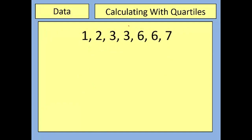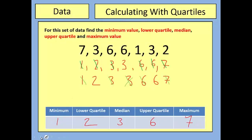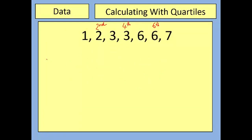When the list is small that's easy to do, but if you had a giant list of numbers, there needs to be a more efficient way. It just so happens there is. To find the lower quartile, use the formula (N+1)/4, where N is the number of data values. We had 7 bits of data, so 7+1 divided by 4 equals 2. That means we want the 2nd value in the list, which was 2 — matching what we found by crossing off.